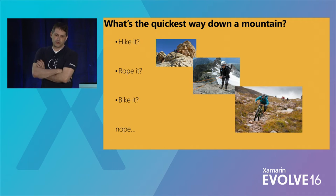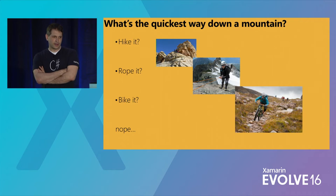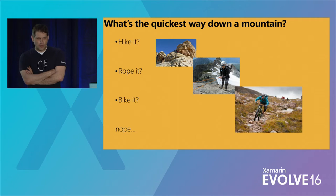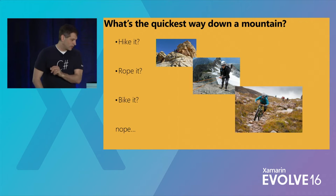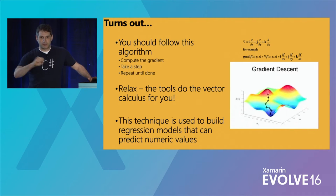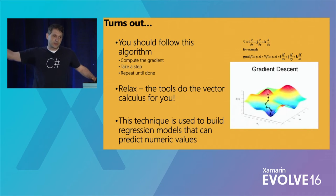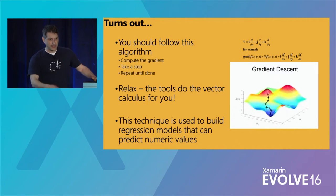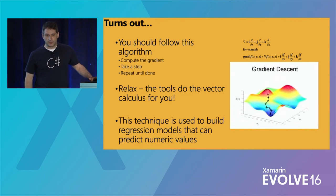Ask yourself this question: if you're hiking down a mountain, what's the fastest way down? How would you find it? Just hike it, grab some ropes, jump off a cliff, get a wingsuit? It turns out this is relevant in data science, because machine learning models often try to compute the least-cost way to find the best-fit line through your data, and it does that by doing a thing called gradient descent. Gradient descent is the same way you'd go down the mountain fastest — take a look at where you're standing, go down the steepest path, take your next step, keep doing that over and over. That's done with vector calculus that the tools compute for you.